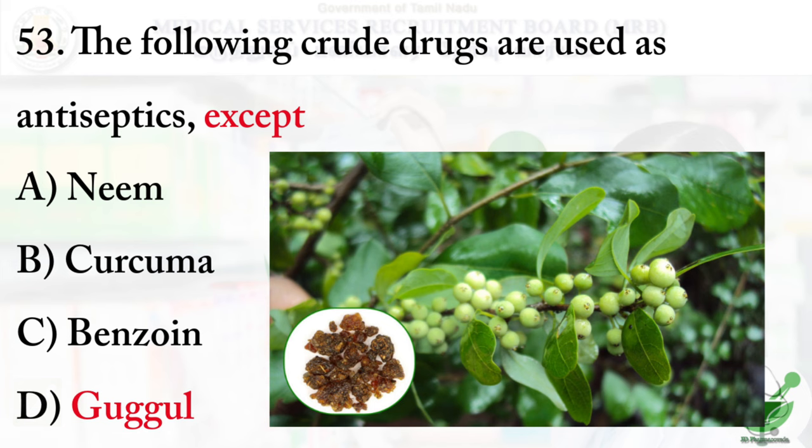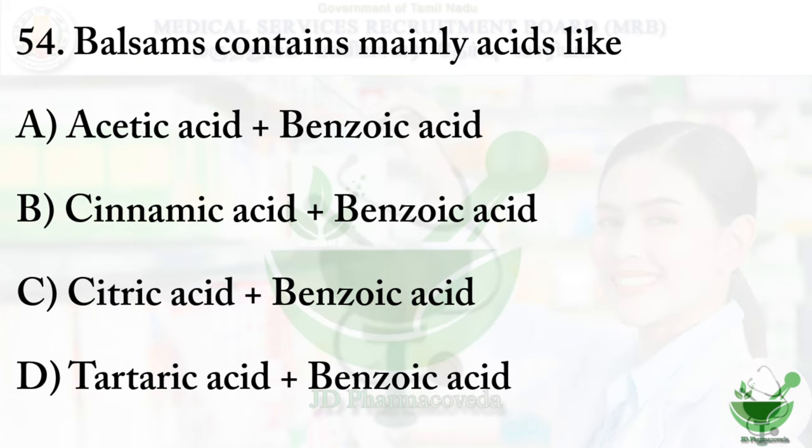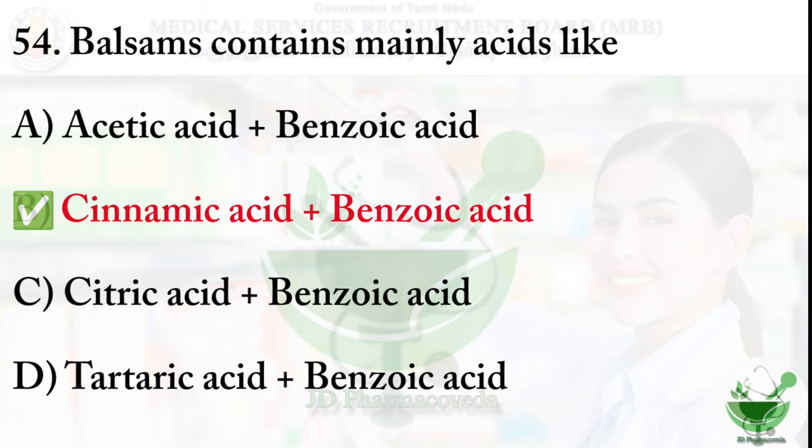Question number 54: Balsams or tolu balsam contains mainly acids like: option A, acetic acid plus benzoic acid; option B, cinnamic acid plus benzoic acid; option C, citric acid plus benzoic acid; and option D, tartaric acid plus benzoic acid. The right option is option B, cinnamic acid plus benzoic acid.